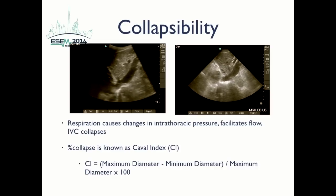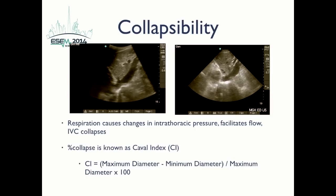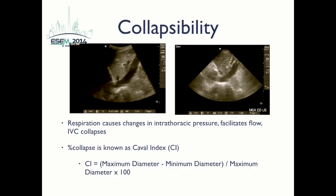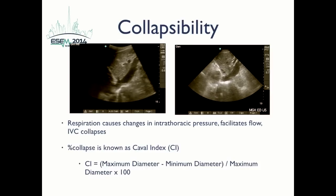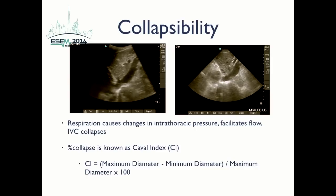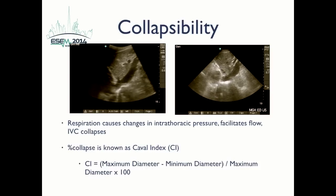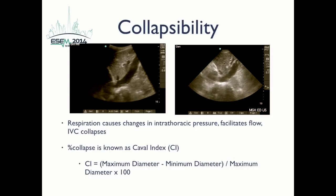Another important concept, apart from the absolute diameter of the IVC, is measuring the collapsibility of the IVC. In states of low intravascular volume, the percentage of collapse is higher compared to states of intravascular volume overload. This is quantified by calculation of the Caval Index, where you subtract the minimum diameter of the vessel from the maximum diameter and divide by the maximum diameter. The Caval Index is a percentage: a value close to 100 indicates almost complete collapse and therefore volume depletion, while a number close to 0 suggests minimal collapse and likely volume overload.